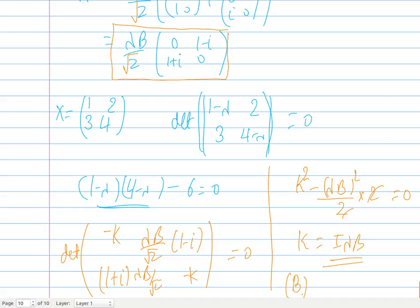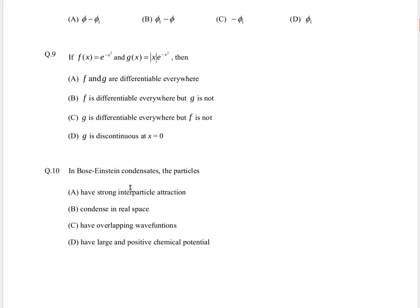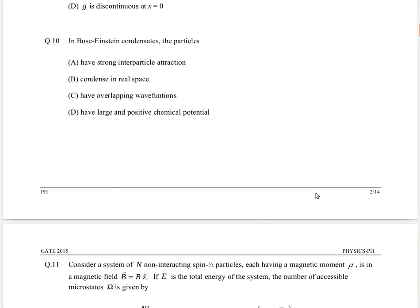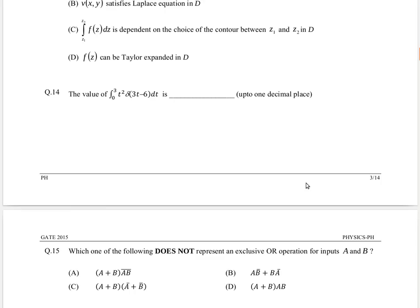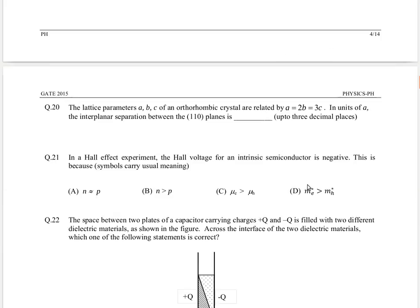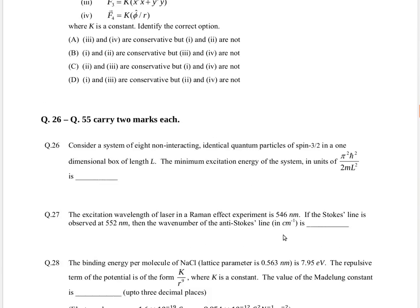There are more problems from quantum mechanics in this paper, such as the Bose-Einstein condensate problem and problems related to statistical mechanics and the Pauli exclusion principle. The problems we discussed were one-mark problems — simple quantum mechanics questions. In the next tutorials I will discuss some of the more challenging problems. Stay tuned, and thanks for watching.